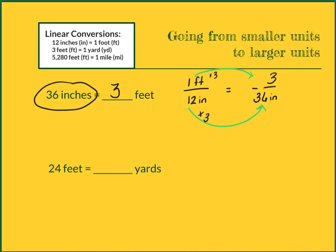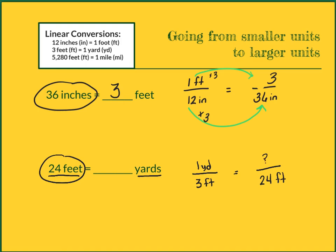On this problem, I'm going from 24 feet to yards. Again, I set up a fraction: 1 yard equals 3 feet. What I have — 24 feet — goes on the bottom with the feet, and my question mark goes on top. I figure out how to get from 3 to 24 by multiplying 3 by 8. I have to do the same thing to the top to keep it equivalent, so I multiply 1 by 8, giving me my new numerator of 8. That's the answer: 24 feet equals 8 yards.